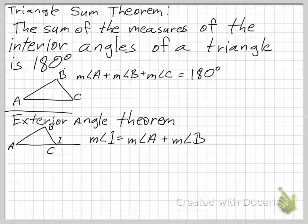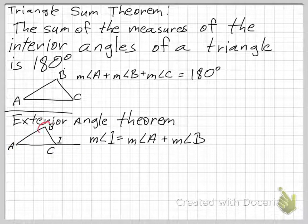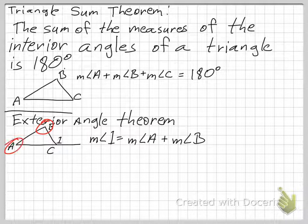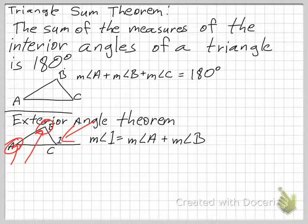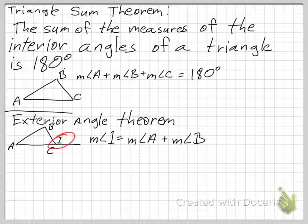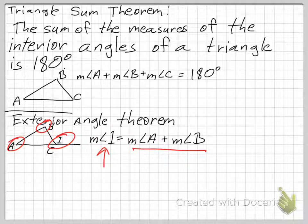Another correction: when discussing the Exterior Angle Theorem, I mistakenly referred to the remote interior angles incorrectly. To clarify: angle 1, the exterior angle, equals the two far-away remote interior angles added together — specifically the measure of angle A plus the measure of angle B equals the measure of the exterior angle.